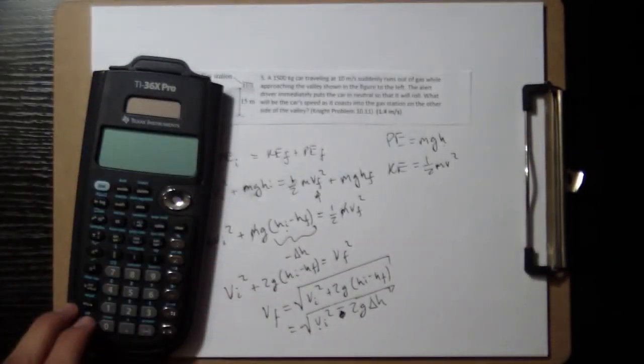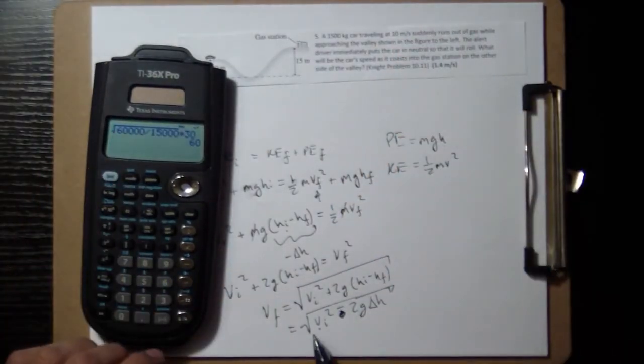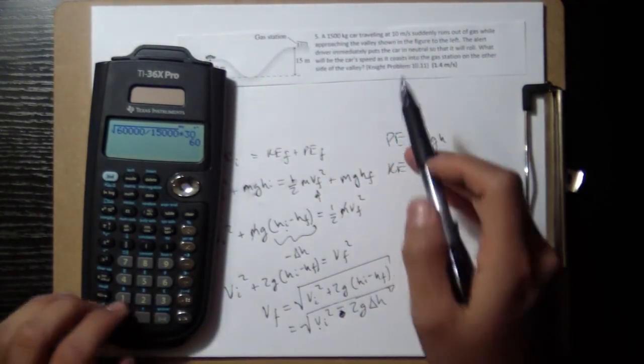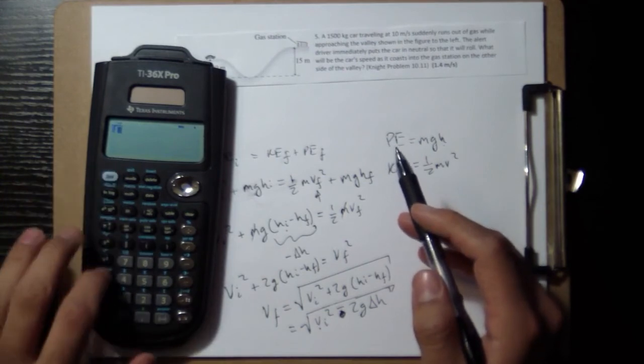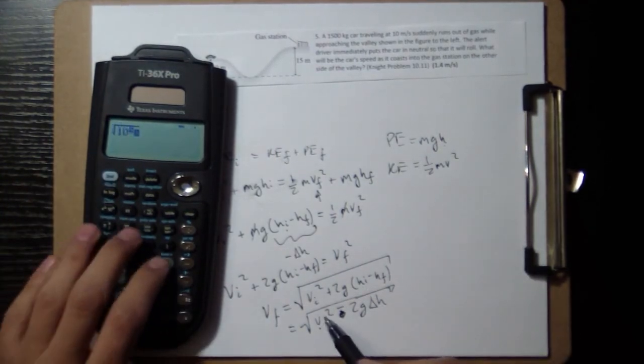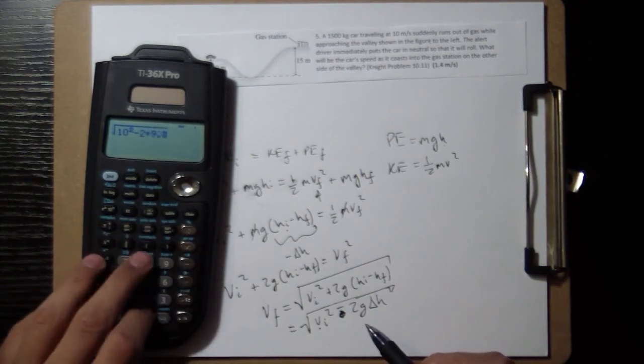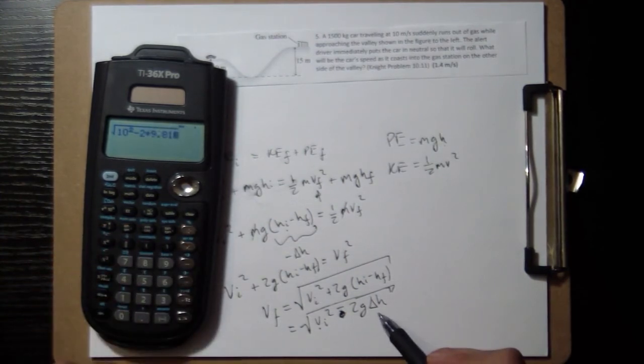Alright, let's put some numbers to it. Initial velocity, 10. Use the square root, 10, square that, minus 2 times 9.81, times...